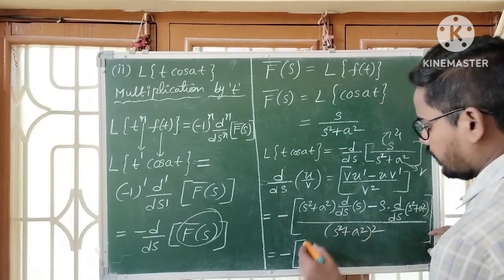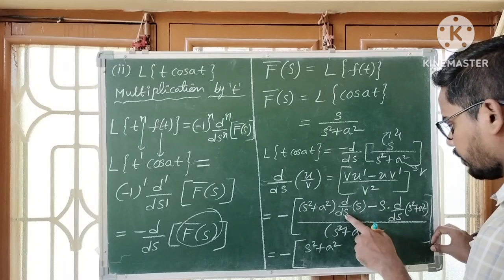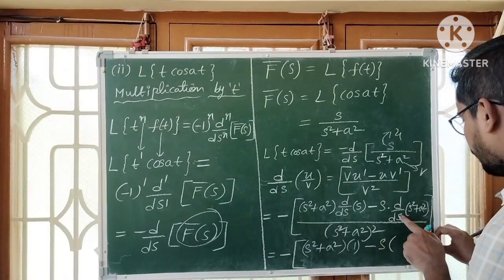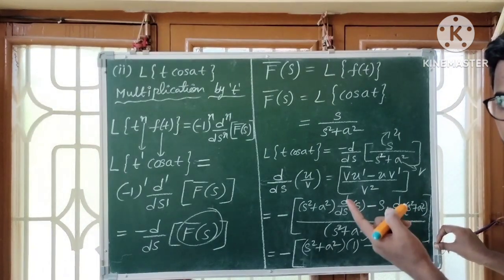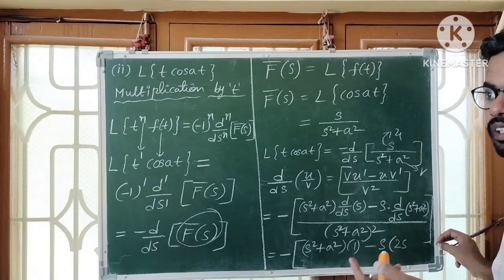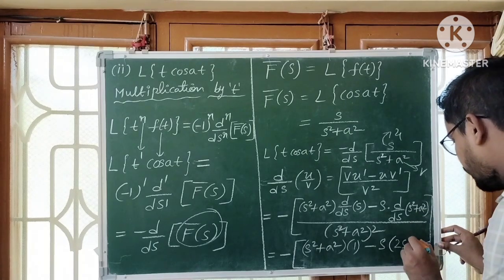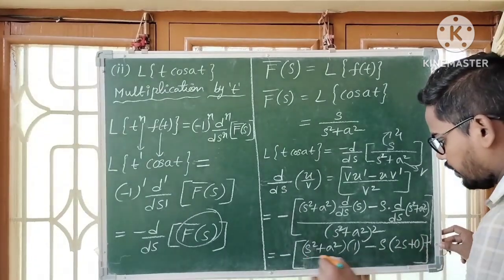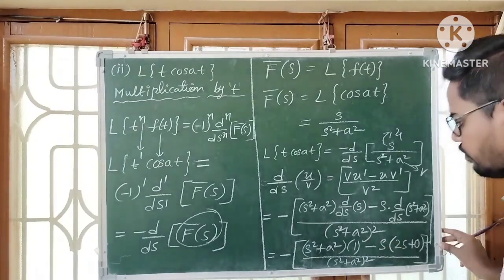The derivative of S with respect to S is 1, so the first term becomes (S²+A²)·1. For the second term, the derivative of S² is 2S, and the derivative of the constant A² is 0. So we have (S²+A²) minus S·2S, all divided by (S²+A²)².